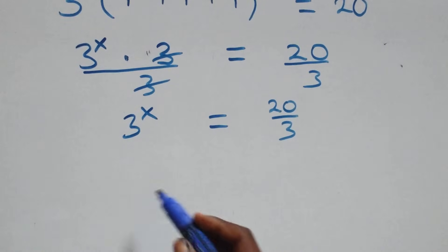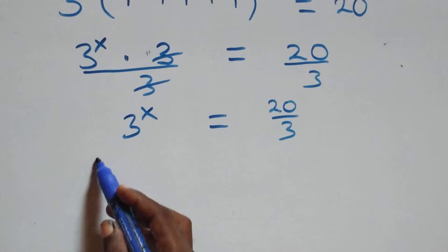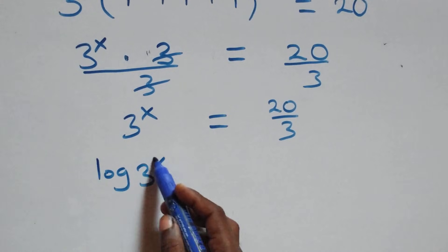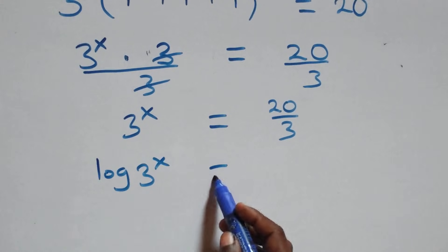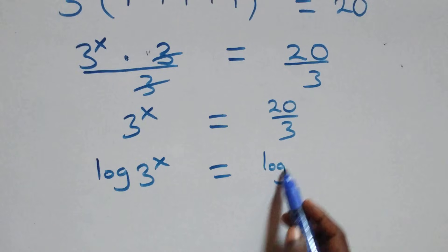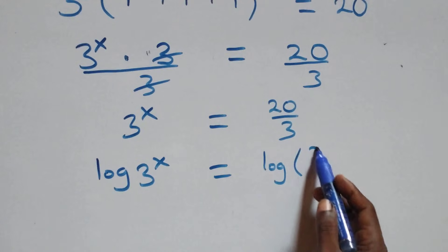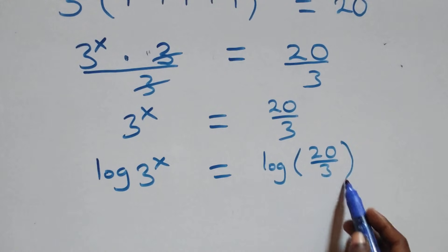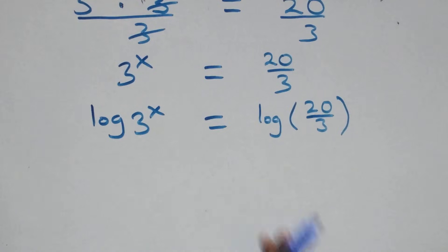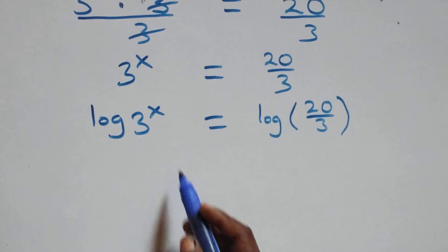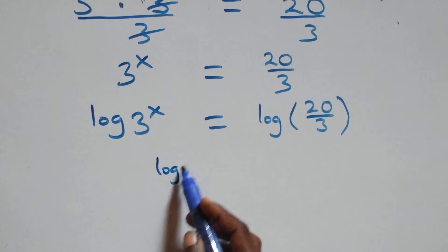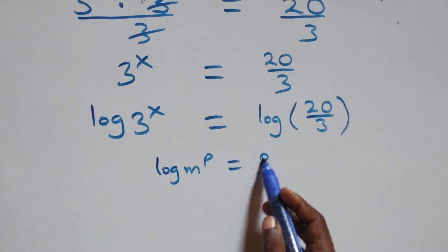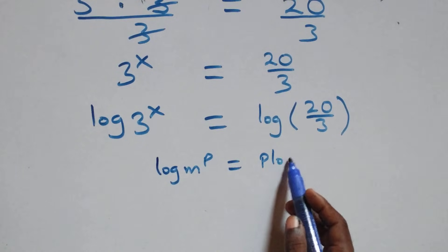The next step, take the log on both sides. We have log of 3 raised to power x equals to log of 20 over 3. The next step, apply the power log rule, where we have log m raised to power p, this is the same thing as p log m.